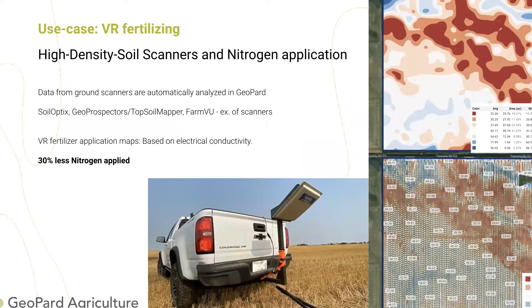Here are some use cases for how Geopard can be used for your clients or on your farms. A practical example: nitrogen application is very important. EC and soil moisture parameters were scanned, the soil scanner data was sent to Geopard, and Geopard automatically creates prescription maps for nitrogen application. We work with companies like SolOptics, who have a booth here.